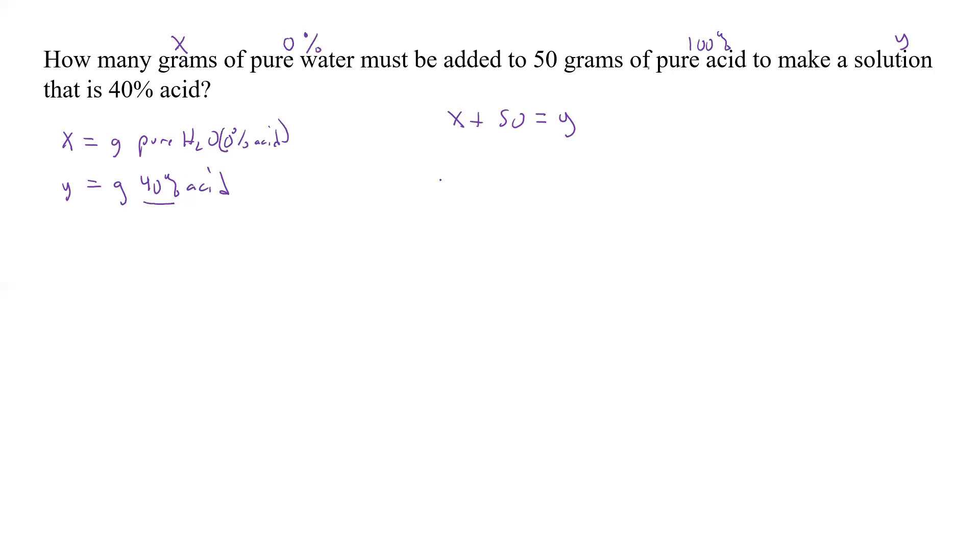That's the 40%. That's 100%. So now we're going to take each of those percents, convert them to decimal and multiply it by what we have here. So we're going to take X, which was 0%. So 0 times X plus, and now the 50 milligrams, that's 100%. So it's 1 times 50 equals, and now it's 0.4 times, and that's Y. Well, 0 times anything is 0. So that's gone. So we have 50 equals 0.4Y divided by 0.4.